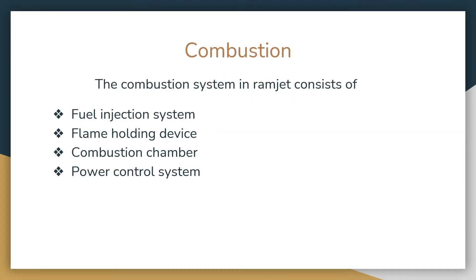For the study of combustion we need to know the combustion system in the ramjet engine. The ramjet engine consists of four different systems: the fuel injection system, flame holding device, combustion chamber system, and the power control system. The fuel injection system consists of injectors which inject the fuel into the flow coming in from the inlet.